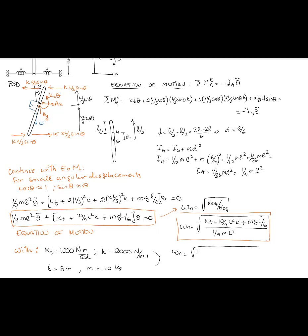We compute: numerator = 1000 + (10/9)(5²)(2000) + 10(9.81)(5/6), denominator = (1/9)(10)(5²). Evaluating this gives a natural frequency of 45.15 radians per second.